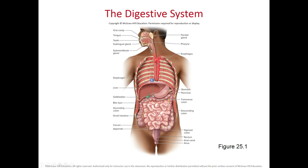The stomach drains churned food into the first portion of the small intestine, which is the duodenum. From the duodenum, food passes into the second portion, the jejunum, and then into the ileum. From the ileum, food that is mostly depleted of nutrients passes into the large intestine, where we majorly absorb water and compact the unusable food. We then produce feces and defecate.